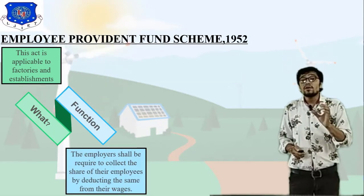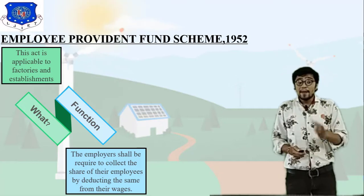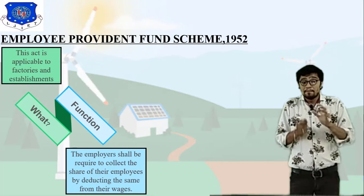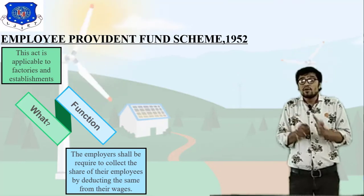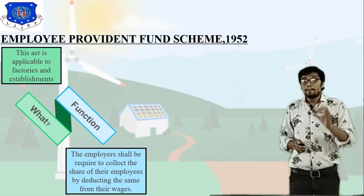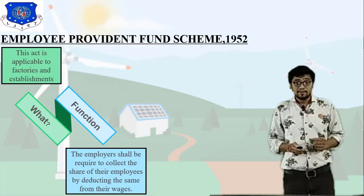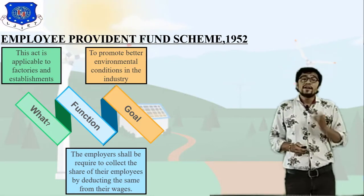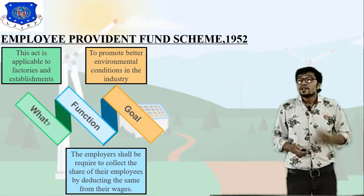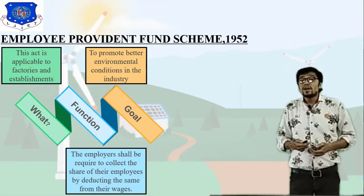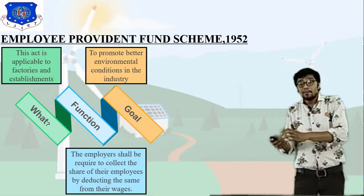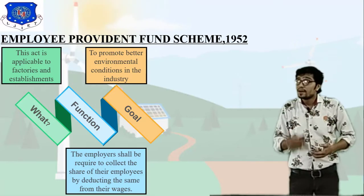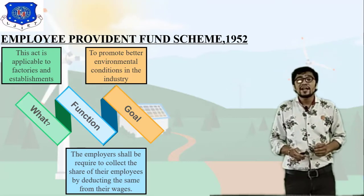An important function of the Employee Provident Fund Scheme is that the employer shall be required to collect the share of their employees by deducting the same from their wages. The goal of this act is to promote better environmental conditions and better employer-employee relationships in the industry.